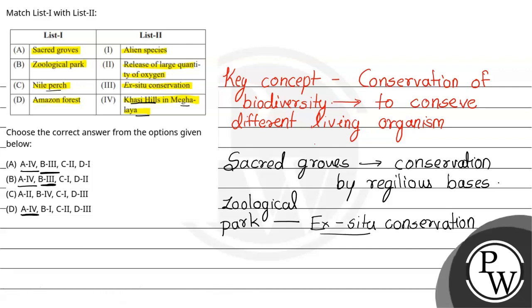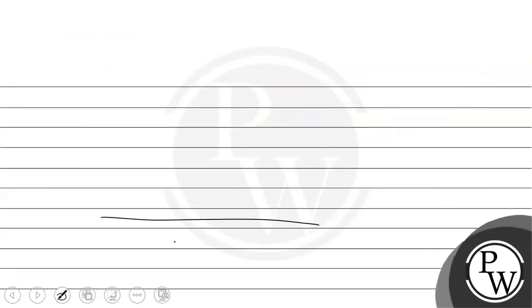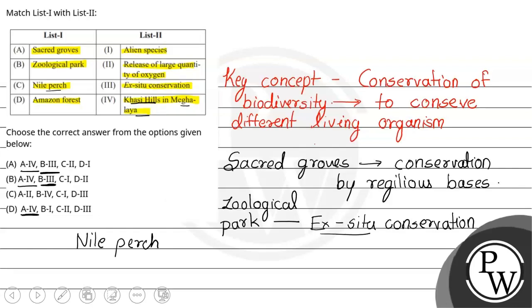The third one is Nile Perch. Nile Perch is a kind of alien species — an introduced species not native to that environment. So C is 1.